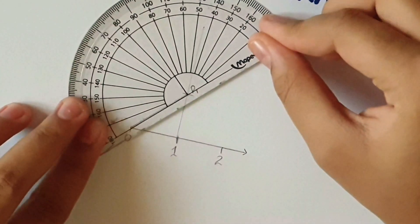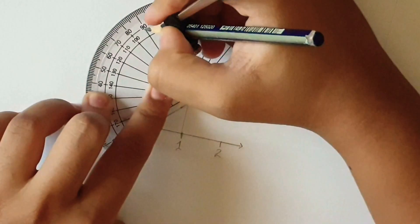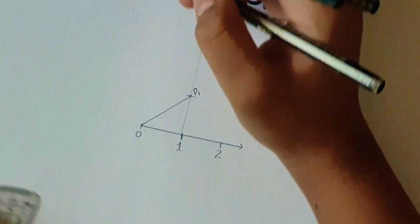After that, place the protractor at P1, mark 90 degree angle and draw a line.